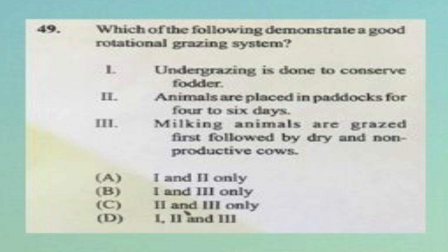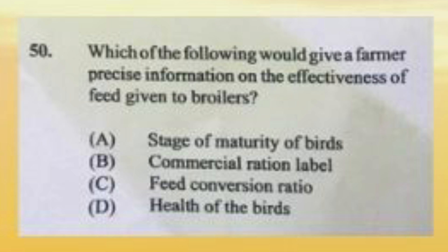One benefit of the rotational system is to always conserve fodder, and two, to reduce the build-up of pests and diseases — you wouldn't want animals following immediately after another group because you don't want parasites transferred from one set of animals to the next. Question number fifty: which would give a farmer precise information on the effectiveness of feed given to broilers? The answer is C, feed conversion ratio.